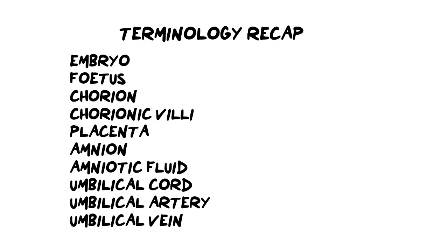Now for a terminology recap you can use for flashcards and active recall when studying. We speak about embryos and fetuses as different stages of development. An embryo is shortly after implantation, within the first eight weeks. A fetus is a much more advanced, developed organism from nine weeks onwards — this is when the organism starts to look more human, perhaps with arms and a head forming.